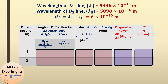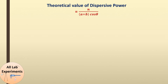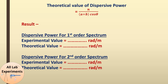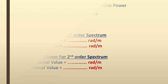We also have the theoretical formula for calculating the dispersive power of a diffraction grating, where n is the order of diffraction, (a + b) is the grating element, and θ is calculated from the previous table. Finally, we can present results: for first order spectrum we have the experimental and theoretical values of dispersive power, and similarly for the second order spectrum.